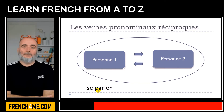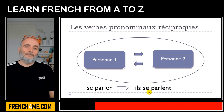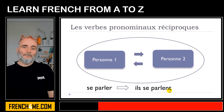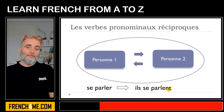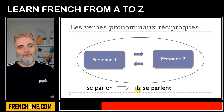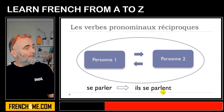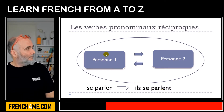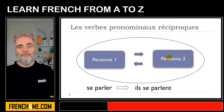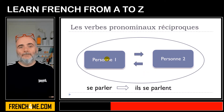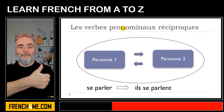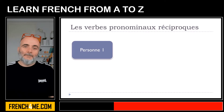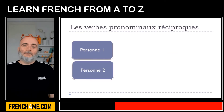A good example is se parler. With the subject ils, you get ils se parlent — they speak to each other. That's the main concept of les verbes pronominaux réciproques: la personne numéro 1 parle à la personne numéro 2, and la personne numéro 2 parle à la personne numéro 1. This cycle symbolizes the concept of les verbes pronominaux réciproques.